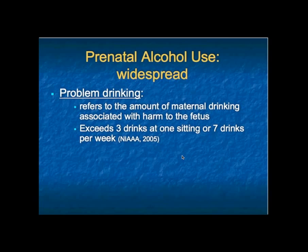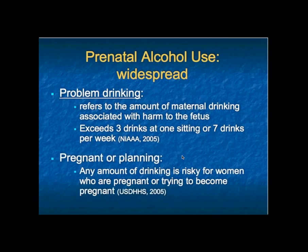Problem drinkers are women who typically have high-functioning lifestyles—they have jobs, they're highly educated with at least a college education—and they don't have the typical appearance of alcohol-dependent women. Yet they're at risk of continuing alcohol exposure during pregnancy because they're drinking at amounts that can still harm the baby. The NIAA defines problem drinking as consuming four or more drinks at one sitting or usually more than seven drinks per week. Given that there is no safe level of alcohol consumption in pregnancy, any amount is considered risky.